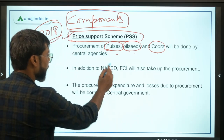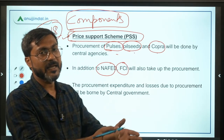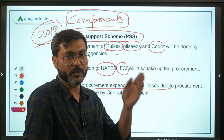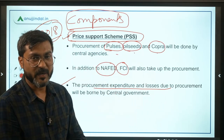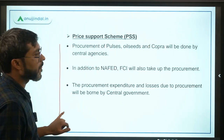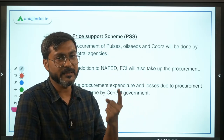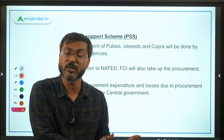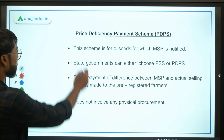The agencies responsible for procuring the crops are NAFED and FCI. The procurement expenditure and losses due to procurement will be borne by the central government.